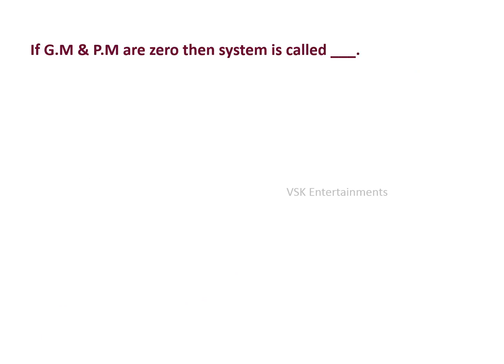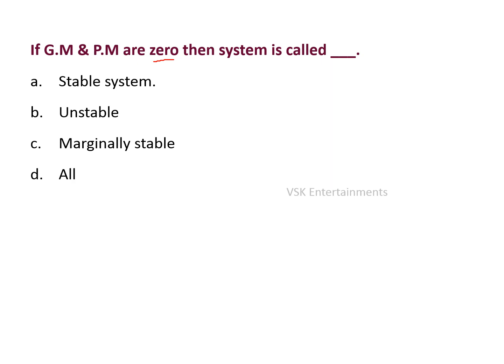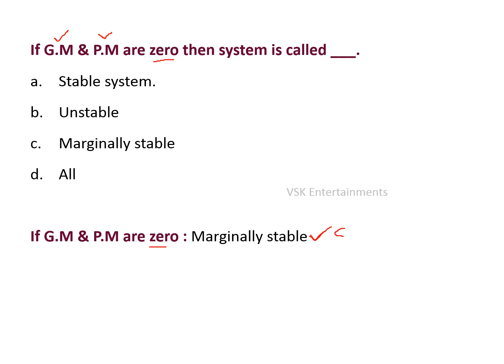Next question: if the gain margin and phase margin are zero then the system is called — options are stable system, unstable system, marginally stable system, and all of the above. In the Bode plot technique, if gain margin and phase margin both are zero, then the given system is marginally stable. This marginally stable system is also known as a critically stable system.